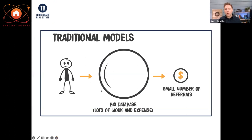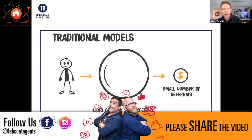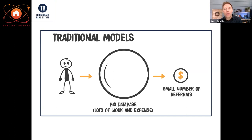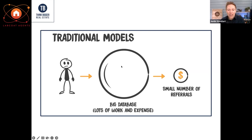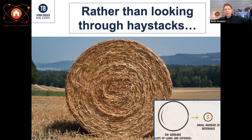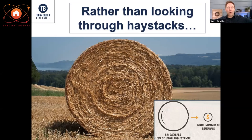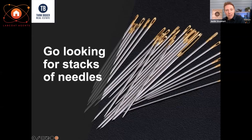The traditional models teach you to just build a bigger and bigger database — you want needles, just add more hay, bigger pipeline. I would argue that strategy is the same reason why you're not at the dinner table. You're looking at your phone the whole time trying to answer texts because you're doing so much sorting through bales of hay that you're not actually present with the people you love most. More hay is not the answer — maybe looking for stacks of needles is the right answer.